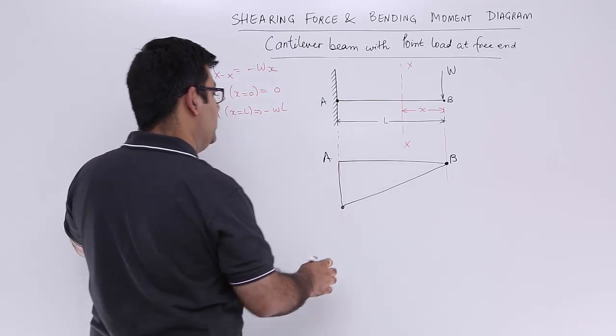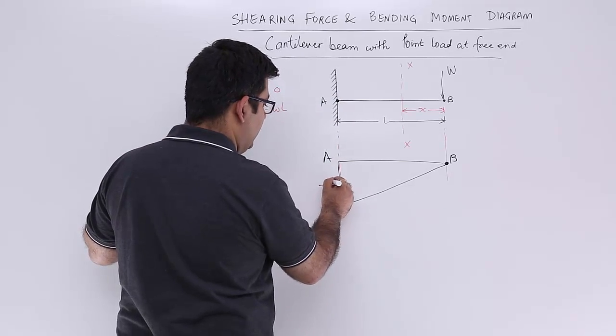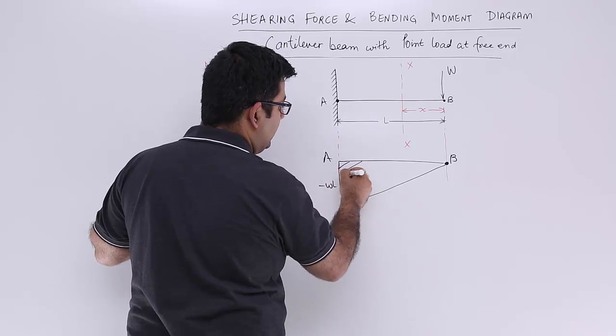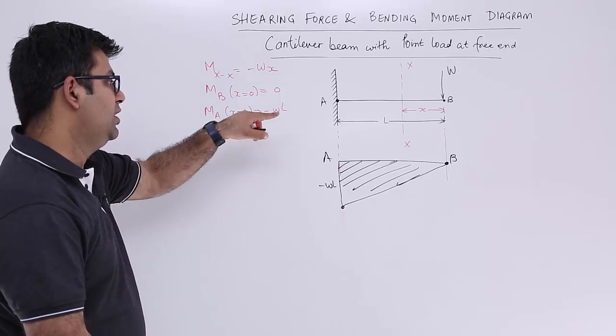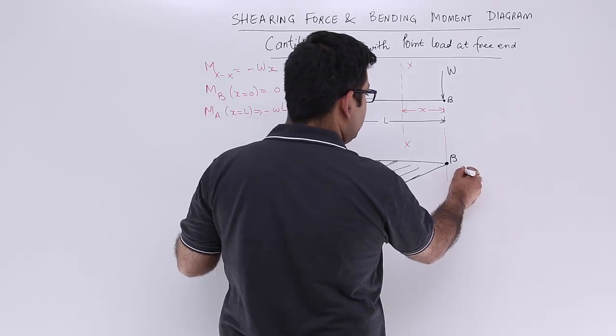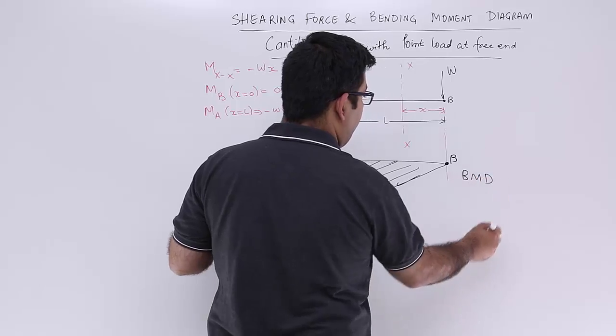So this is minus wl. So this is the bending moment diagram which shows the variation of bending moment on this particular beam. So this is BMD.